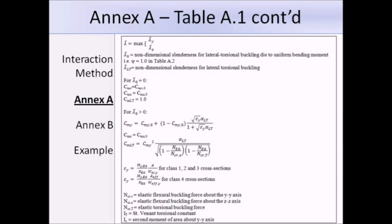We get equations for the terms CMY0, CMZ0, and those are equivalent uniform moment factors. We need to get those from table A.2. They've given you all the equations that you need. It just involves a lot of number crunching to work out the final interaction factors.